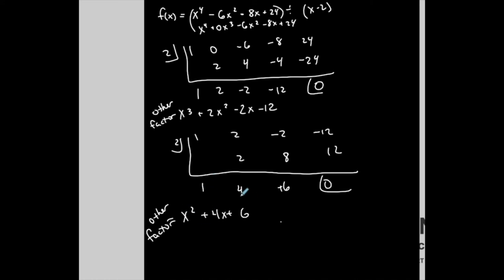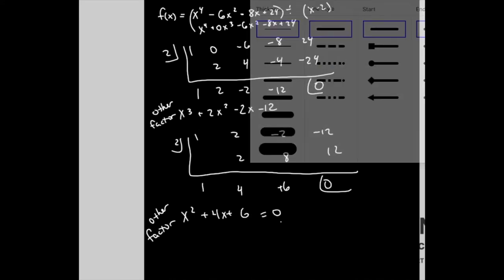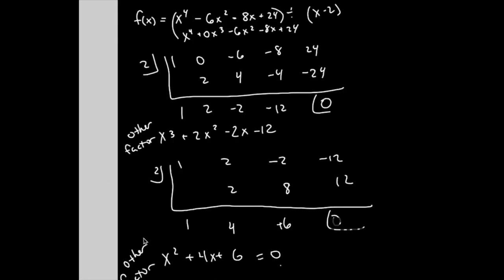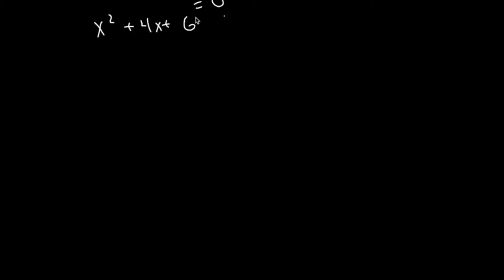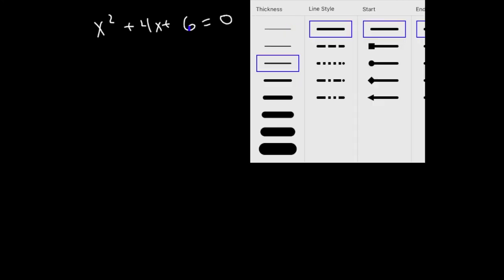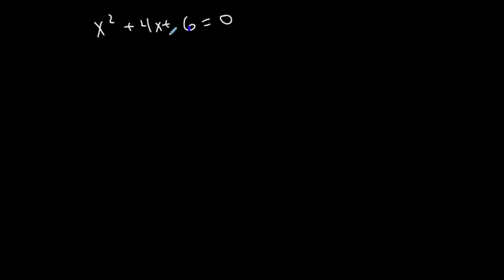Looking at x squared plus 4x plus 6 — this quadratic does not factor. So I have to solve this equation using another method to get the other two zeros. I'll bring this to another page and use the quadratic formula, since factoring won't work here.